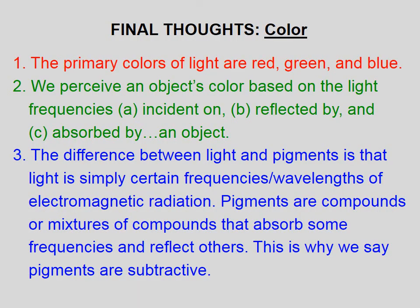The primary colors of light are red, green, and blue. We perceive an object's color based on the light frequencies A) incident on, B) reflected by, and C) absorbed by an object. The difference between light and pigments is that light is simply certain frequencies or wavelengths of electromagnetic radiation. Pigments are compounds, or mixtures of compounds, that absorb some frequencies and reflect others. This is why we say pigments are subtractive.